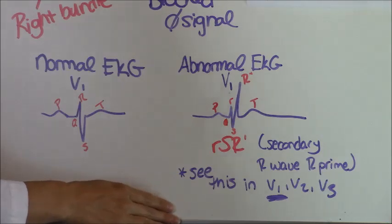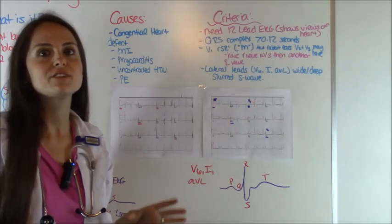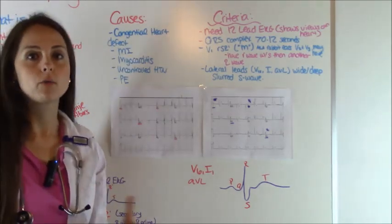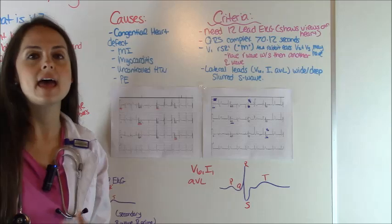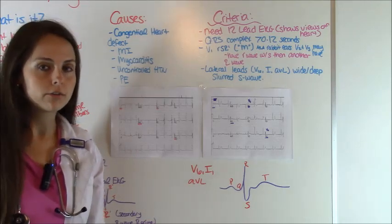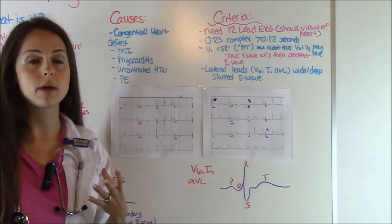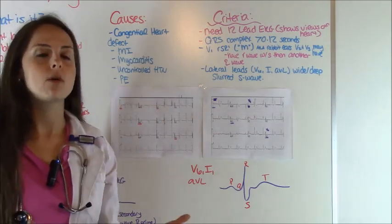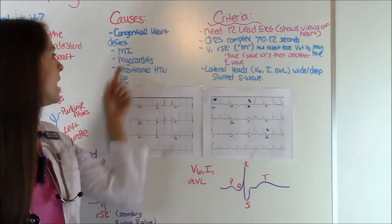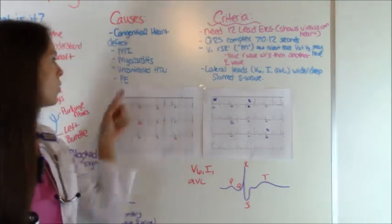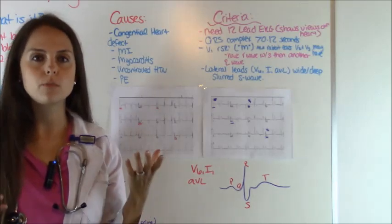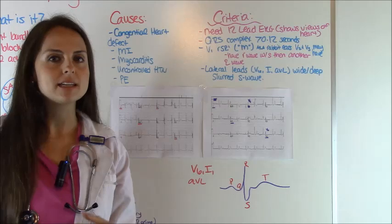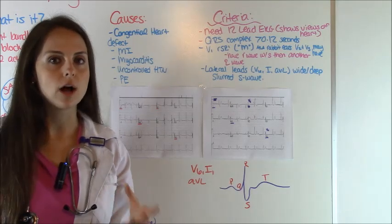Now let's talk about the causes of right bundle branch block. There are various causes: number one, a congenital heart defect — they were born with this. Number two, they've had an MI, a myocardial infarction — a heart attack that's damaged some of the heart muscle. Also myocarditis, meaning a viral or bacterial infection that affected the heart muscle; uncontrolled high blood pressure; or a pulmonary embolism. A lot of times when these right bundle branch blocks appear suddenly in someone normally healthy, they might suspect the patient has a PE — a blood clot in the lung.